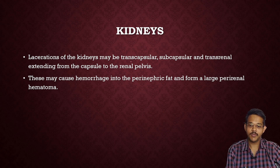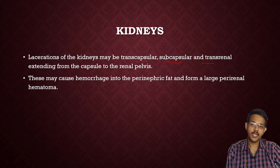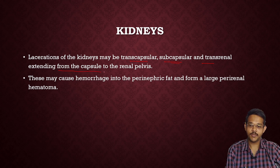Laceration of the kidneys may be transcapsular, where capsule as well as parenchyma is ruptured; subcapsular, where capsule is intact and only parenchyma is ruptured; or translinal, where the central part of the kidney is ruptured and may extend from the capsule to the renal pelvis. These may also cause hemorrhage into the perinephric fat and form a large perirenal hematoma.